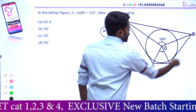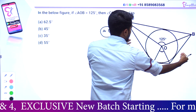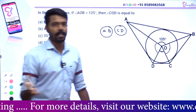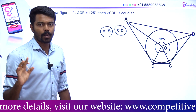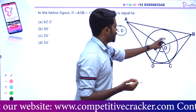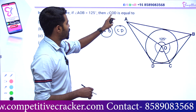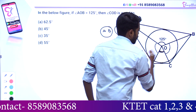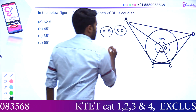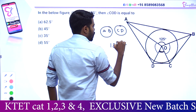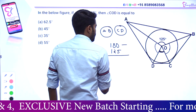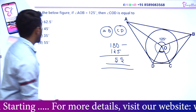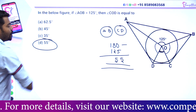The same thing here: A, D, C, B are opposite sides. If you want to join the angle, it is supplementary — this angle and this angle are supplementary. Now, angle AOB is 125 degrees. The angle COD is supplementary to AOB. We get 180 minus 125 equals 55 degrees. So we have to answer option B: 55 degrees.